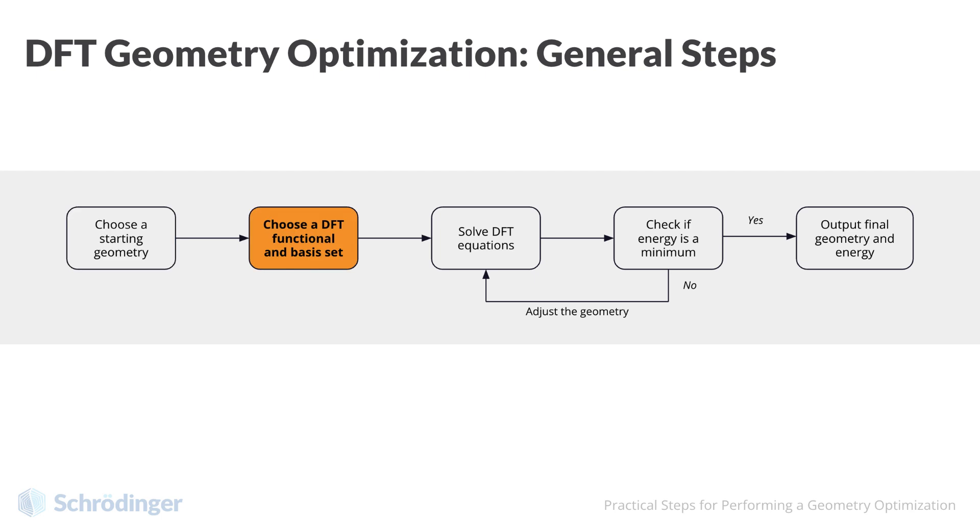Second, choose the DFT functional and basis set. We will explain these terms in just a minute. Third, solve a form of the Schrödinger equation that produces DFT energy for the current geometry. These equations are called self-consistent field, or SCF equations, and we will also explain these shortly.